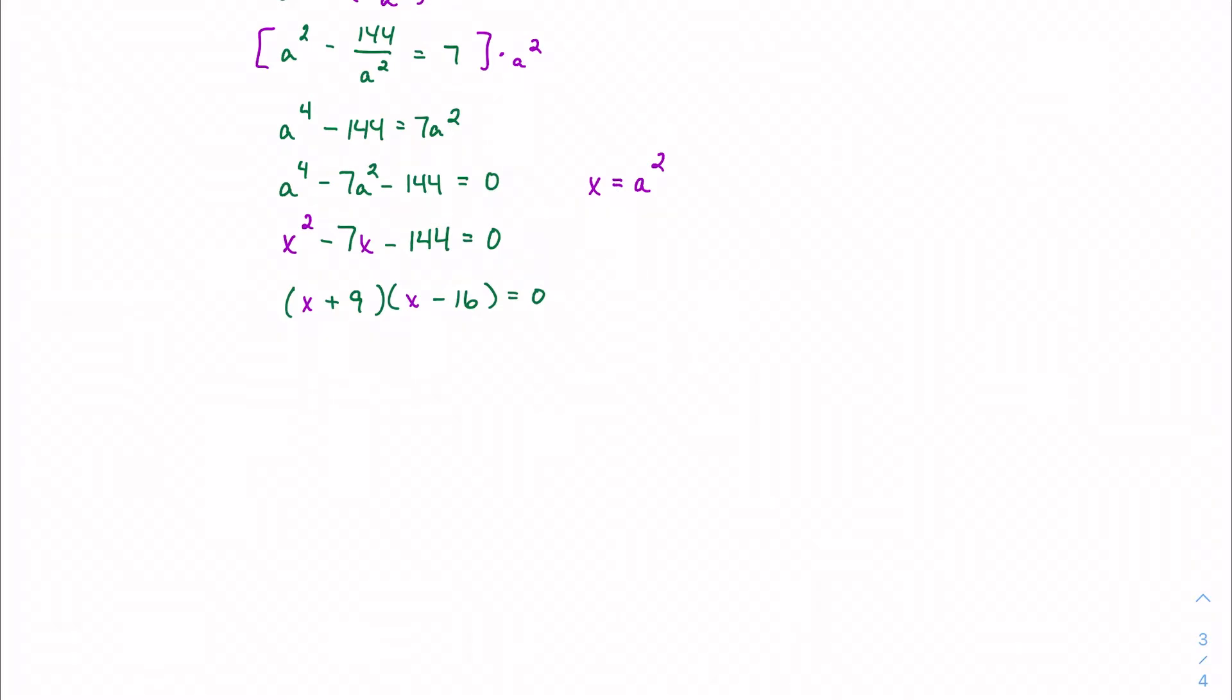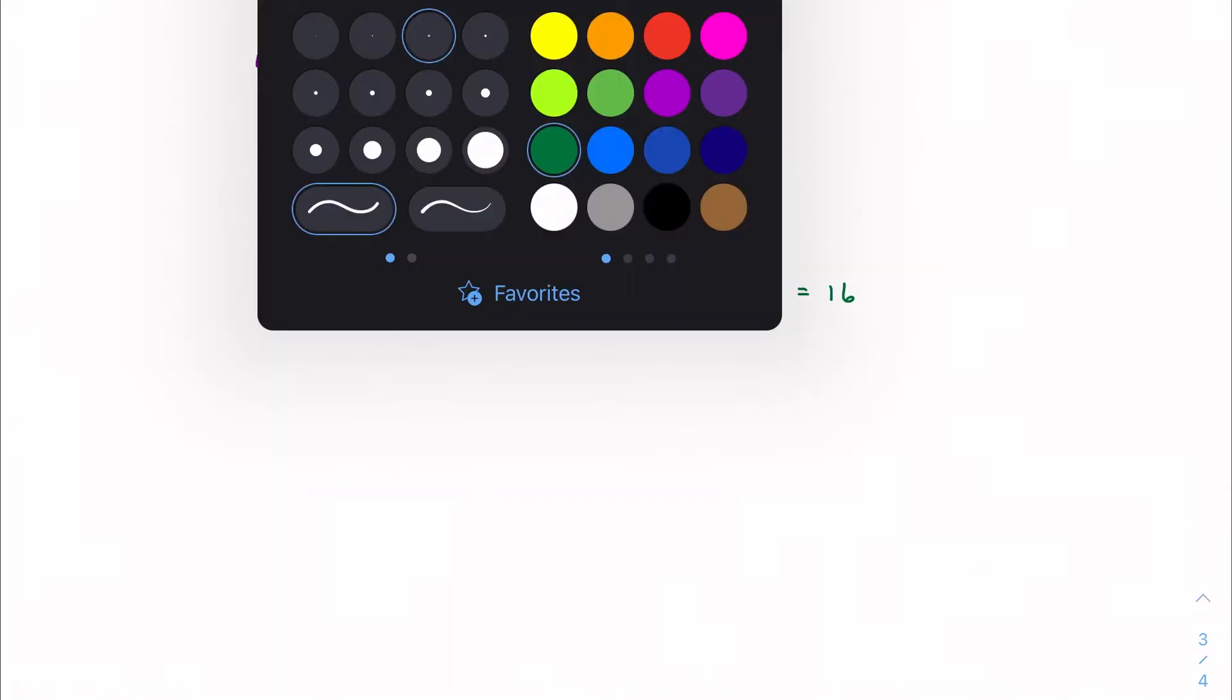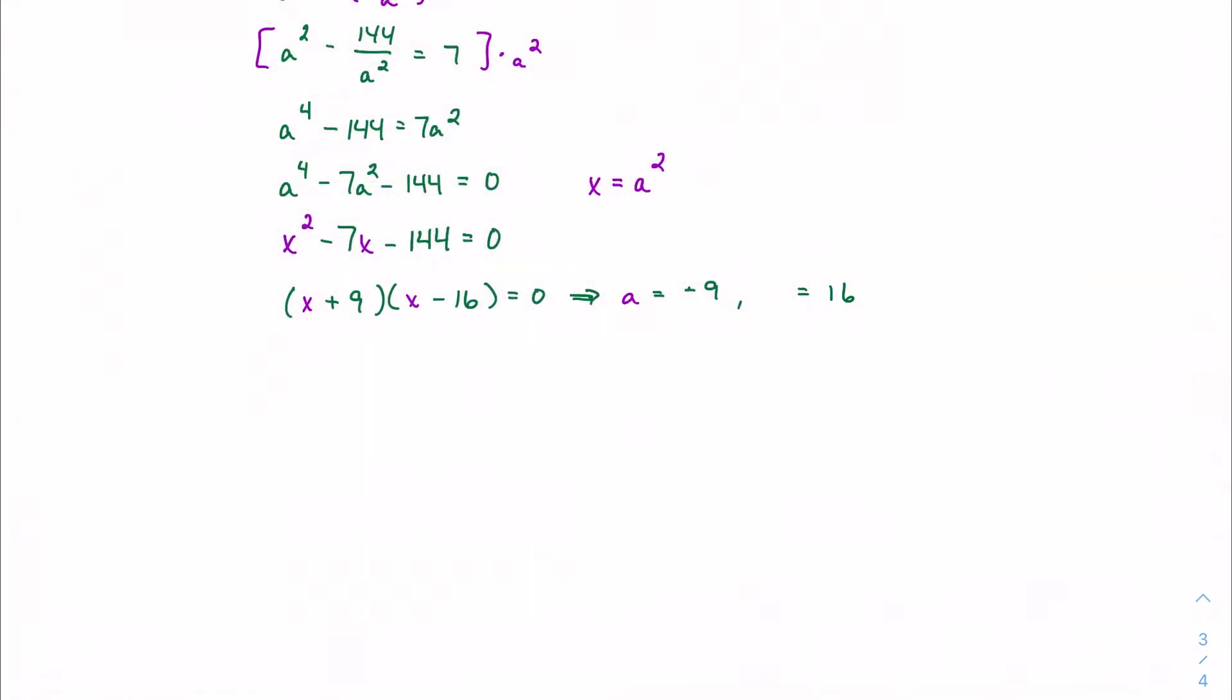This tells me that if I were to solve for this, x is negative 9 and x is 16. Well, I didn't start with x, I started with a. So if I'm going to make this substitution step, I need to do the reverse. I need to undo the substitution.